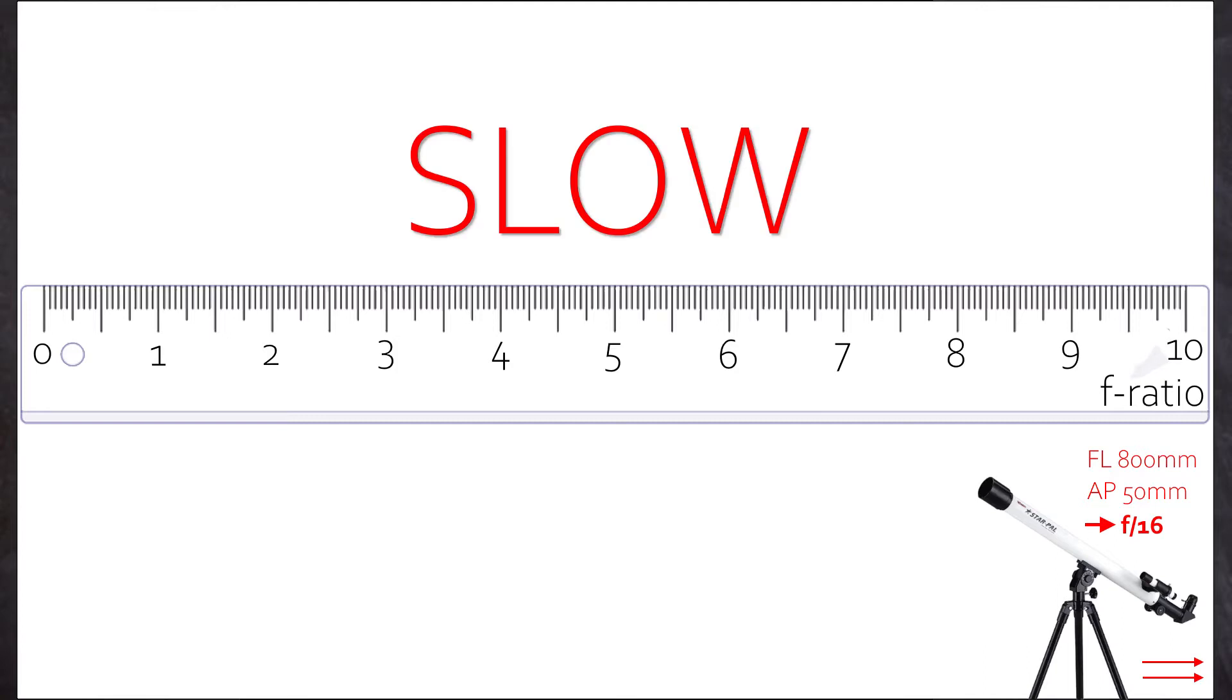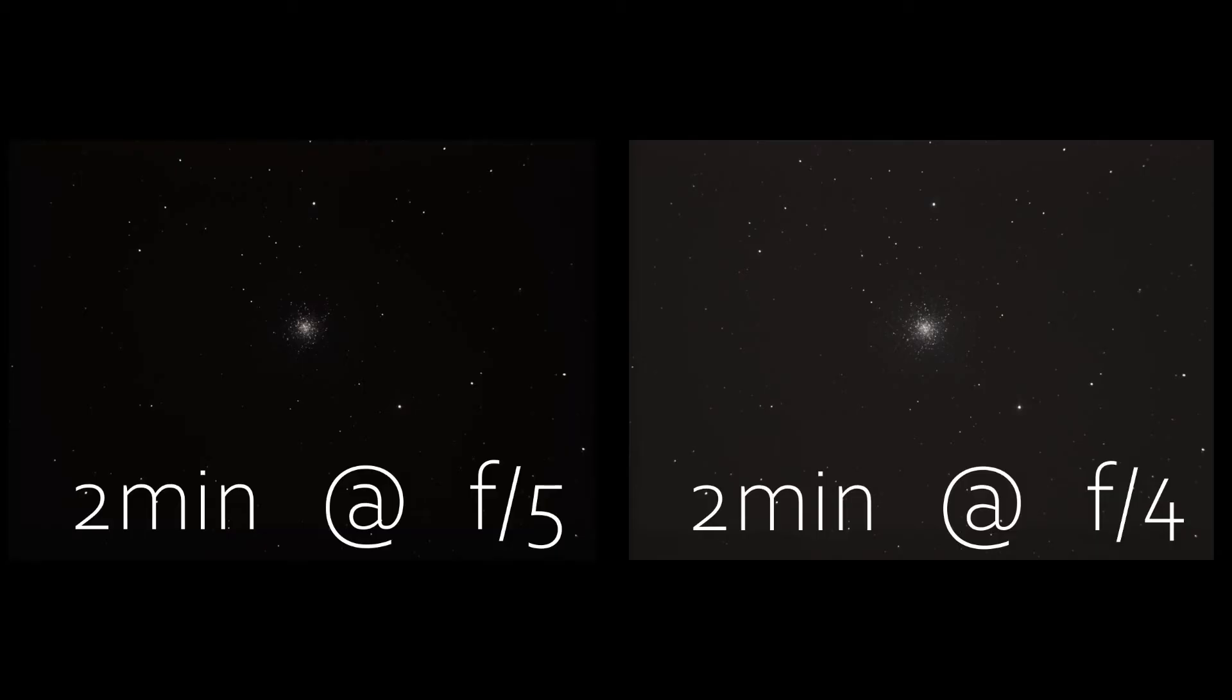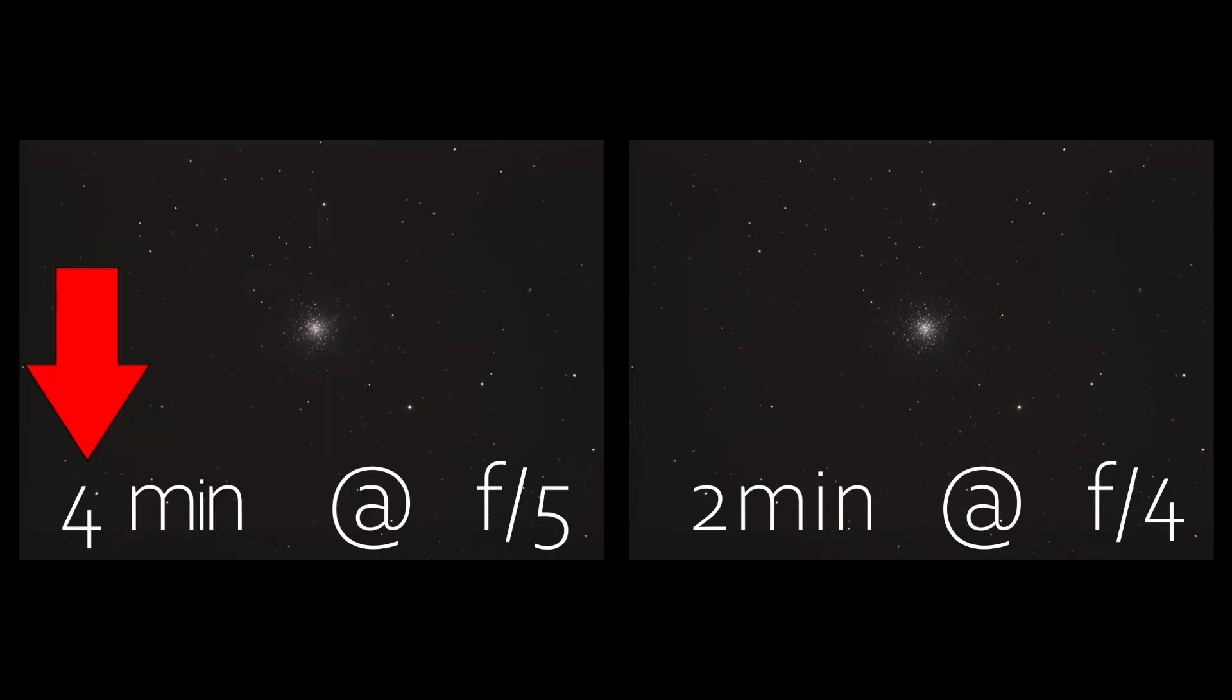Why do we call this scope slow? Because if you compare two scopes, one short, the other long, and both have the same aperture, if you want to create an equally bright image with both scopes, then the scope with the higher f-ratio will need a longer exposure to meet the brightness level of the shorter scope. Hence the scope with the higher f-ratio is slower.